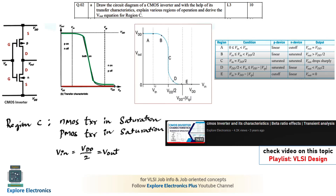The five regions indicate different operating levels of the P and N transistors. Conditions for each region and the transistor states are shown. In detail, the CMOS inverter characteristics video is available in the VLSI Design playlist for a complete walkthrough of how the transistors behave and how the output is generated in each region.